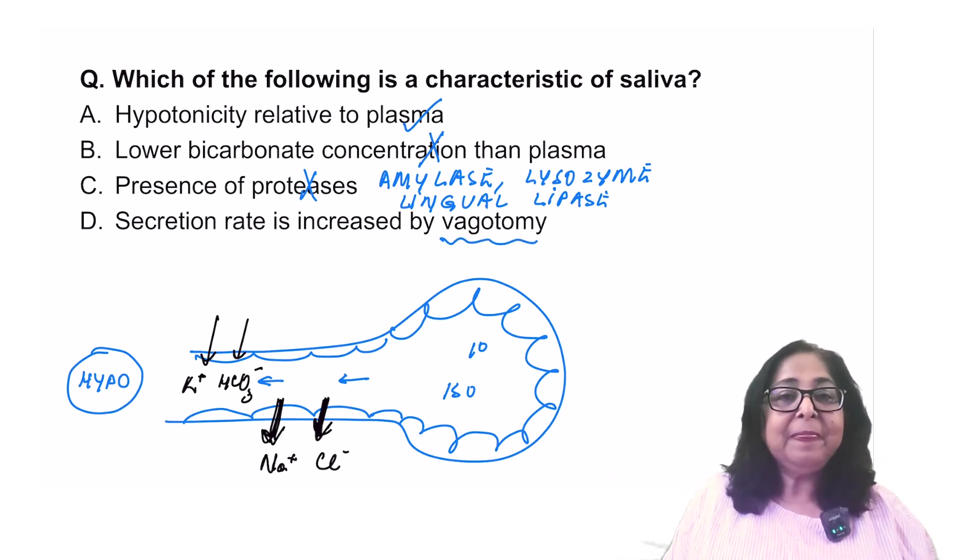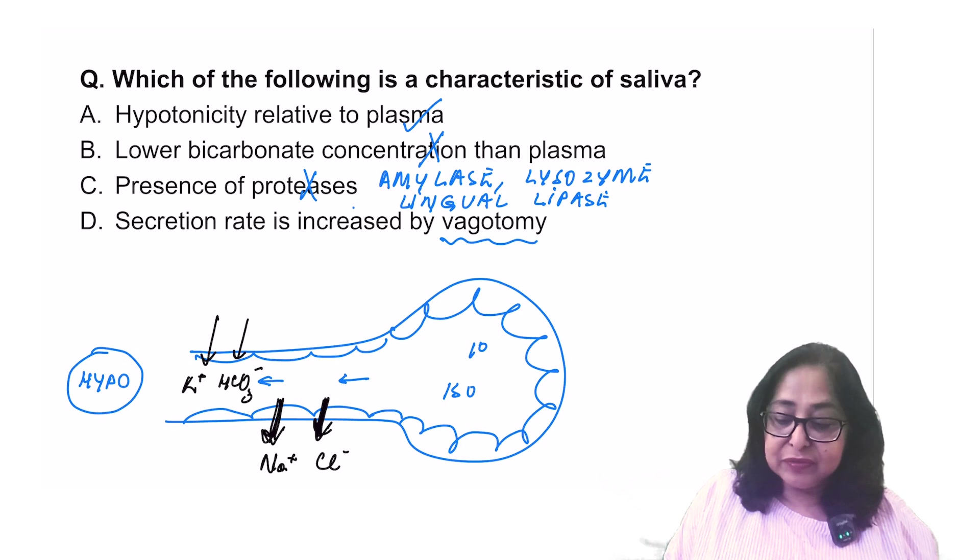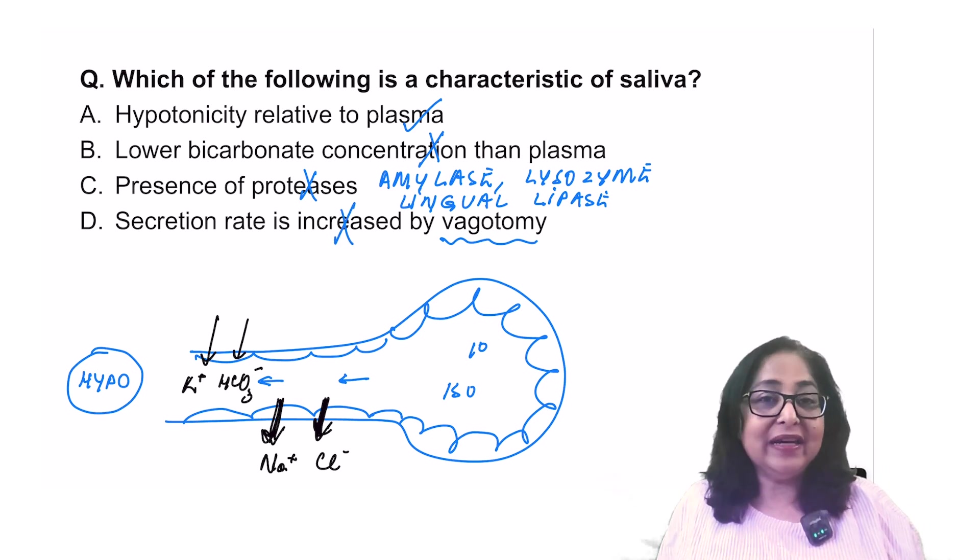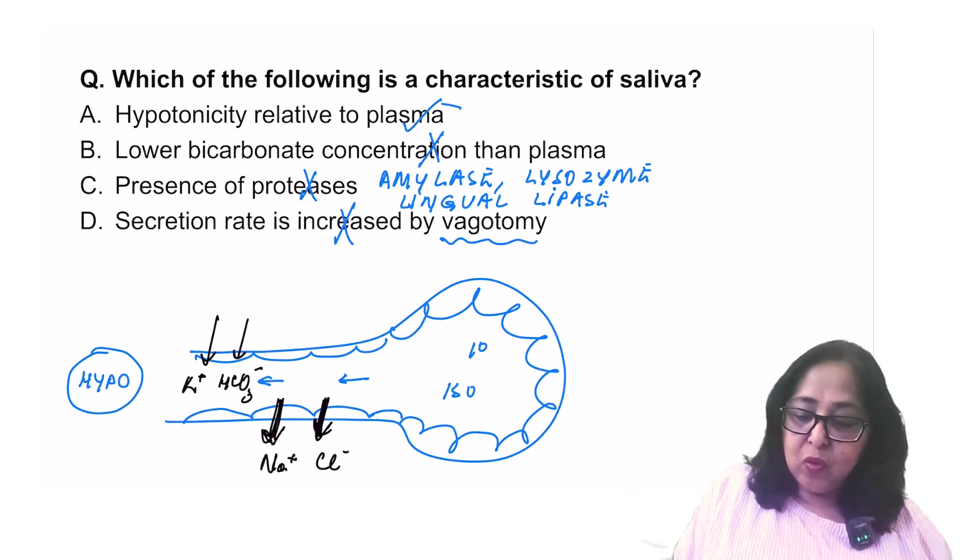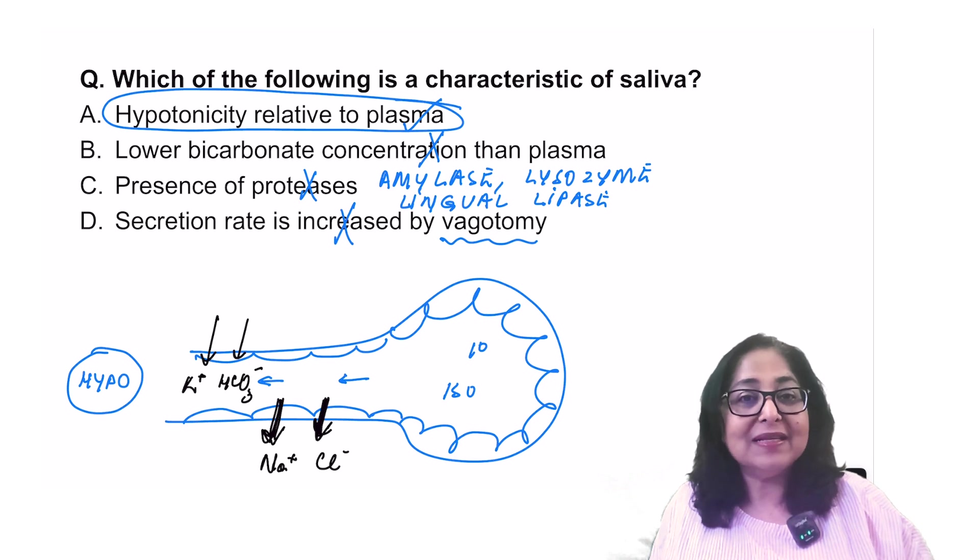Secretion rate is increased by bicarbonate. Vegas is the major mechanism for the secretion of saliva. So vagotomy will, in fact, reduce it. So this is also incorrect. The answer to this question is therefore A, which is the only correct statement, hypotonic saliva relative to plasma.